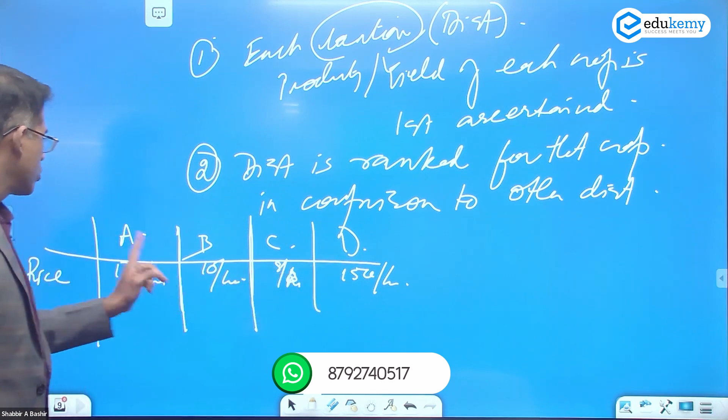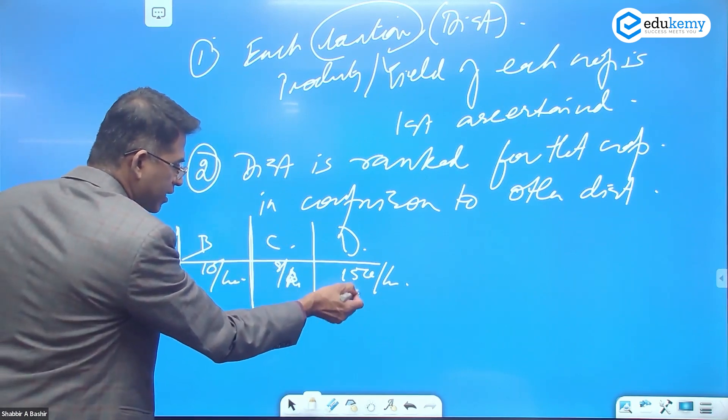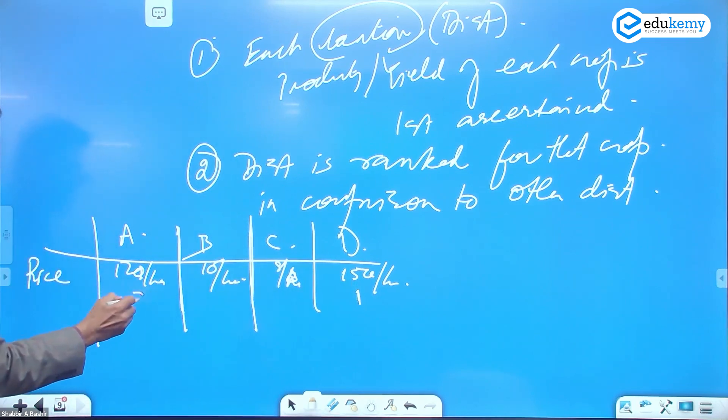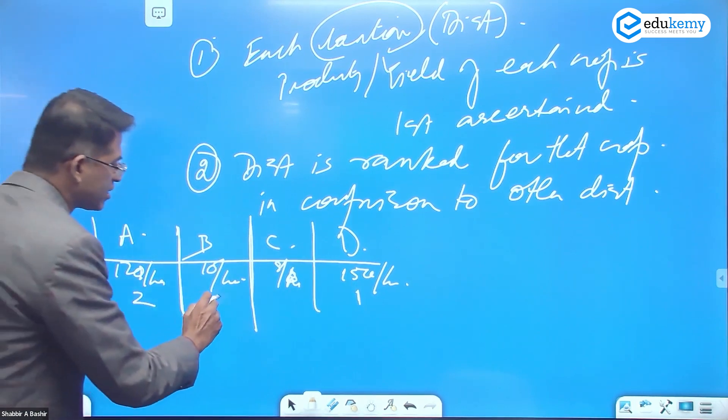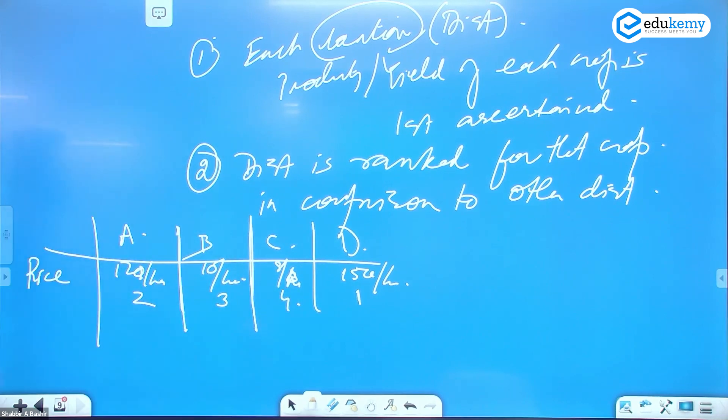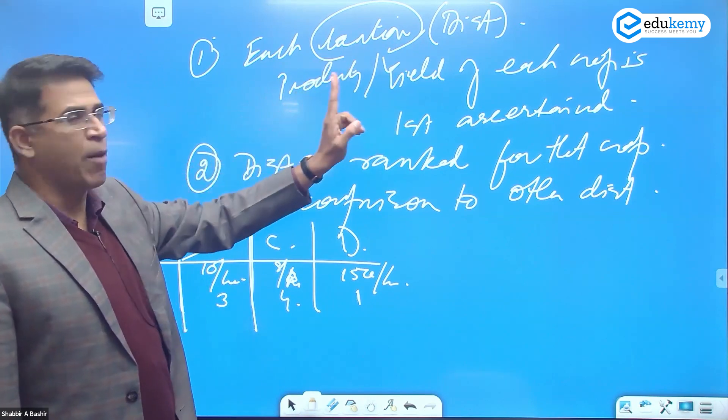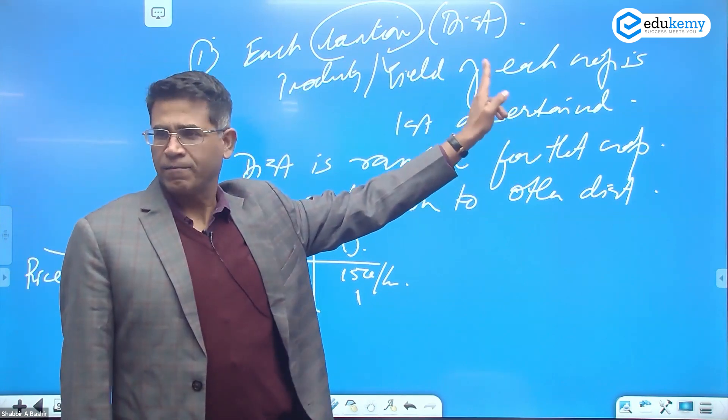Then what I do is I'm ranking them 1, 2, 3, 4. Rank number one is D, rank number two is A, rank number three is B, and rank number four is C. So I repeat: for each location, the productivity of each crop is first ascertained, then the districts are ranked for that crop in comparison to other districts.